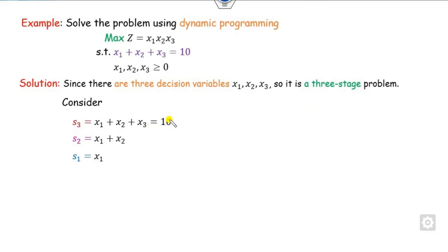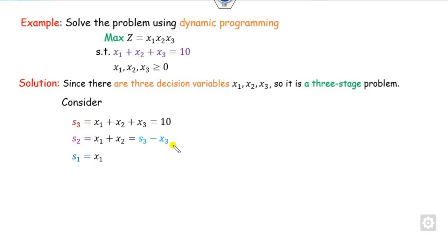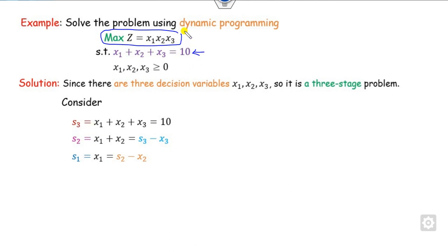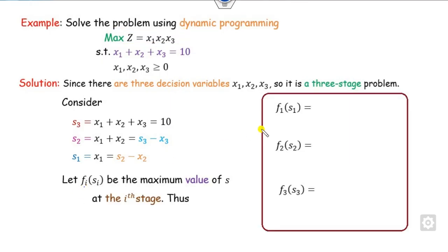In this example, the value of s3 is given as 10. The value of s2 can be found as s3 minus x3, or equivalently 10 minus x3, depending on your preference. The value of s1 is found as s2 minus x2. Now, with these constraints defined, we can look at the objective function, denoting f1(s1), f2(s2), and so on.